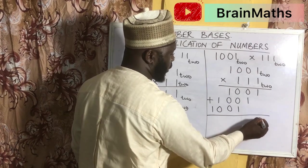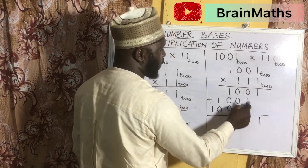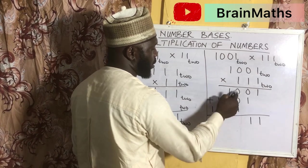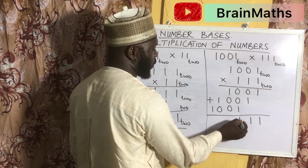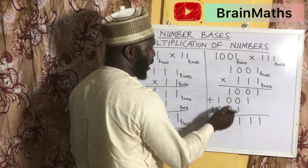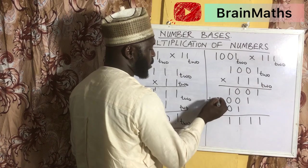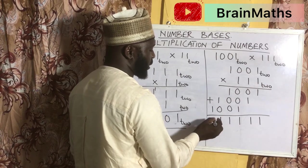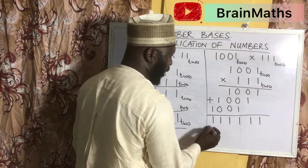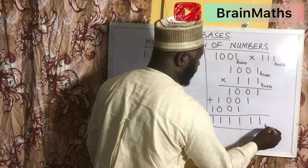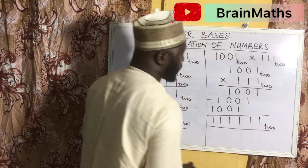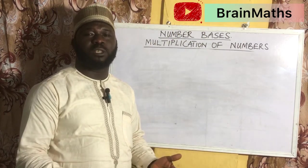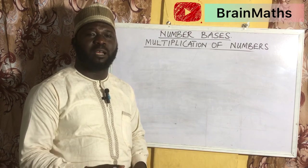1 plus 0 gives 1. 0 plus 1 is 1. 1 plus 0 is 1. 1 plus 0 is 1. 1 plus 0 is 1. And 1 plus 0 is 1. All in base 2.